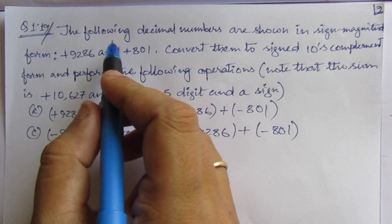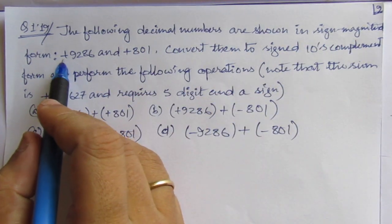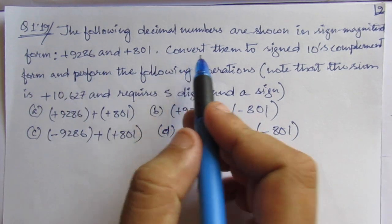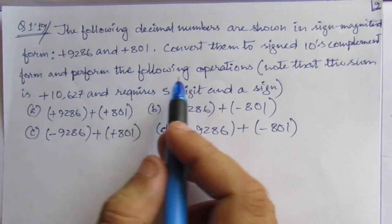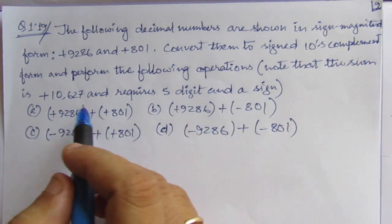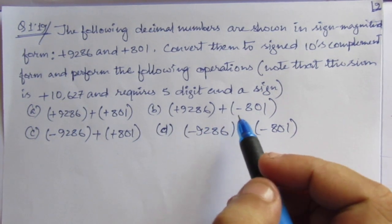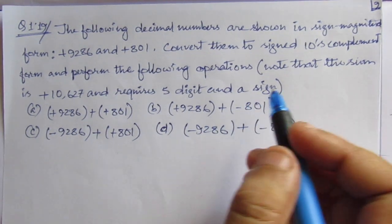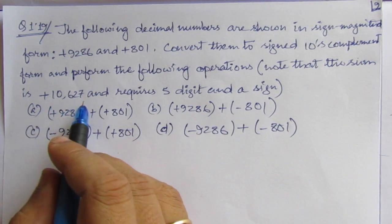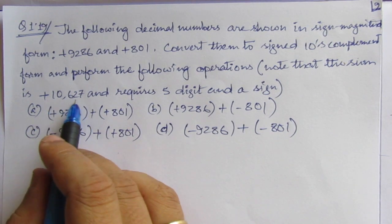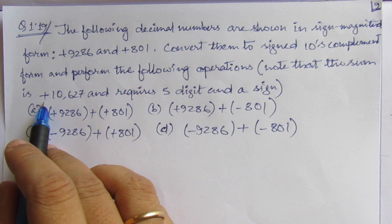So the problem is, the following decimal numbers are shown in sign magnitude form. There are some sign and magnitude and convert them to signed 10's complement form and perform the following operations. We have to perform the subtraction or addition by using 10's complement.